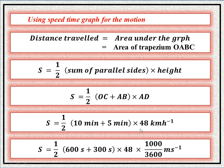Now we convert to standard units. 10 minutes equals 600 seconds, 5 minutes equals 300 seconds, and 48 km/h is converted to meters per second by multiplying by 1000 and dividing by 3600.